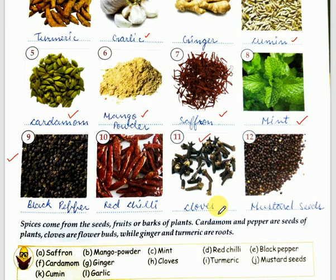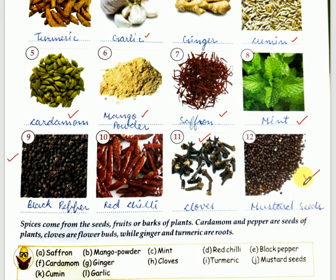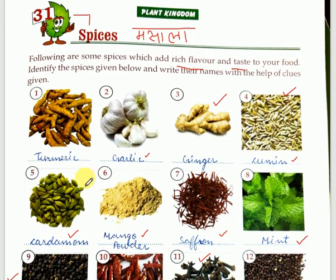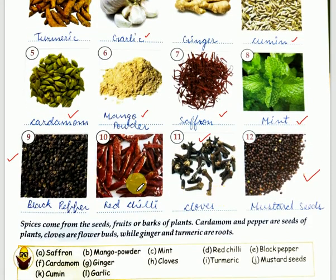Now twelfth — you can see these are also very small balls. This is the picture of mustard seeds, and in Hindi we call it sarson ke dane. I hope all the spices you have identified. Please ask your mother to show all the spices in real.